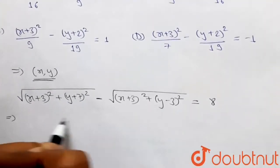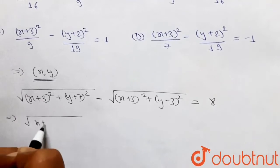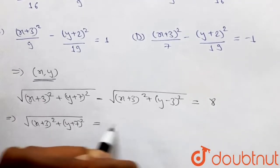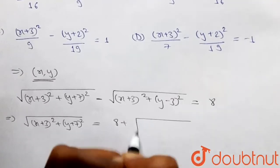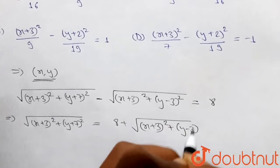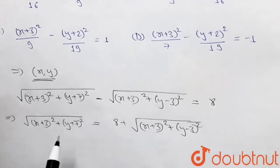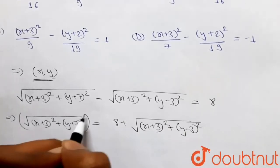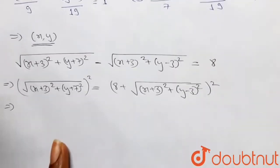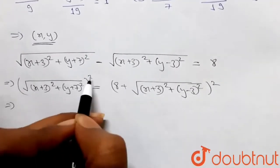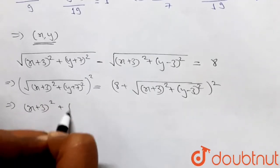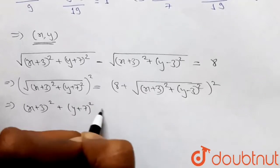So I can write this as √[(x+3)² + (y+7)²] = 8 + √[(x+3)² + (y-3)²]. Now let's square both sides. The square root on the left will cancel with the square, giving us (x+3)² + (y+7)² on the left side.